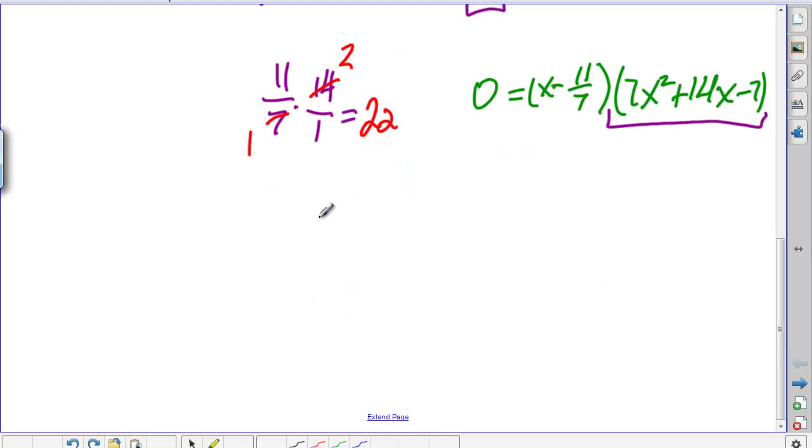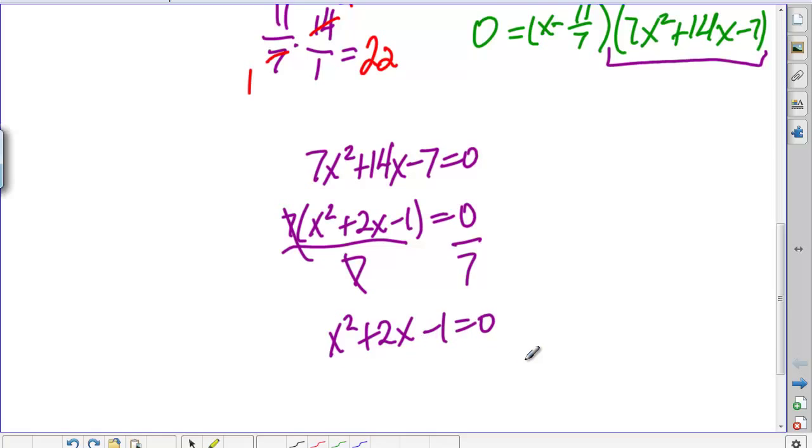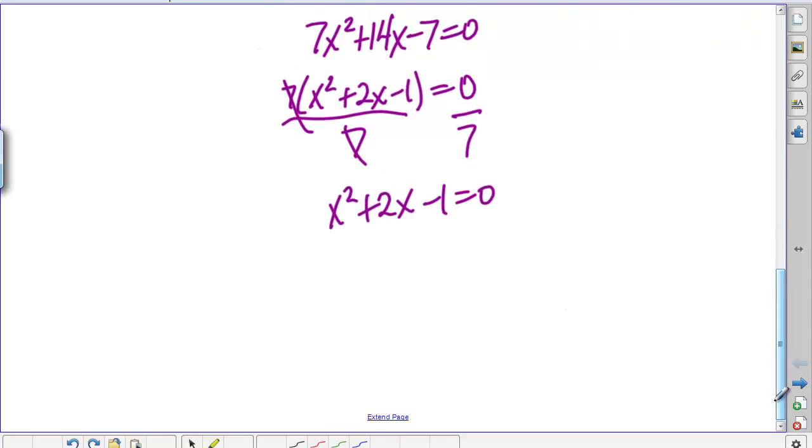In other words, if we knew what the solution to this was, then we could find those other two solutions. We can factor a 7 out of it, and we could actually divide both sides by 7. Now at this point, we can't actually do anything else. There aren't two numbers that multiply to negative 1 and add to positive 2. But we can use the quadratic formula.